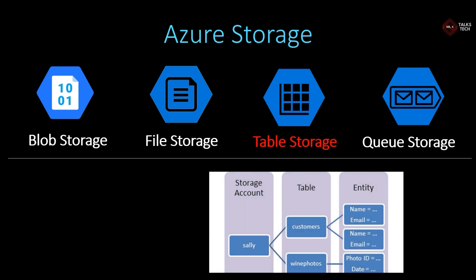To configure table storage, you need a storage account first. Unlike blob storage, you don't need to create a container — after creating the storage account you can directly create a table. As you can see here, there are two tables: customers and wine photos. Inside the tables you supply values in key-value format. For example, the keys are name and email, and you supply values like name: John, email: john@gmail.com.